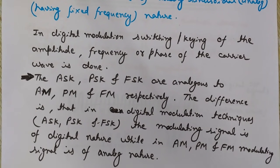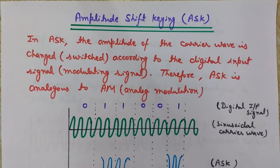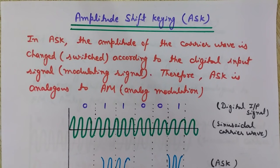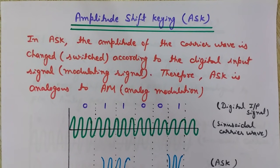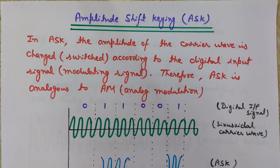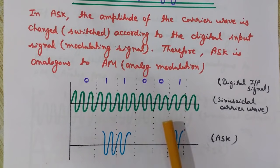First we will look at Amplitude Shift Keying, ASK. In ASK, the amplitude of the carrier wave — which is analog — is changed or switched according to the digital input signal. Since the modulating signal is digital, ASK is analogous to AM. In amplitude modulation we vary the amplitude of the carrier wave according to the instantaneous value of the message signal; here the difference is that the message signal is digital, so we switch the carrier amplitude according to the digital input.